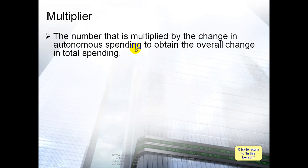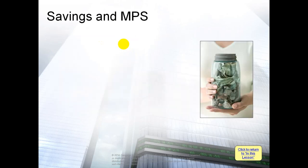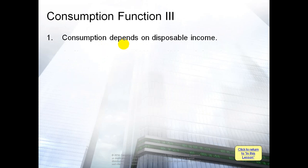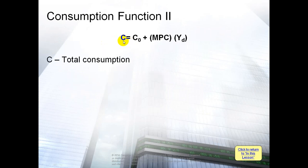Remember that total consumption equals autonomous consumption plus induced consumption. Autonomous consumption is the consumption generated not because of disposable income, but because of other factors. Induced consumption is the consumption that increases or decreases because of disposable income.